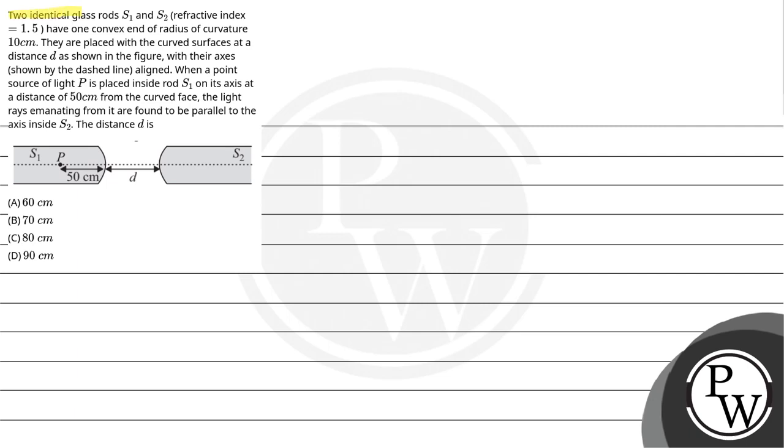Let's read the question. Two identical glass rods S1 and S2 with refractive index equal to 1.5 have one convex end of radius of curvature 10 cm.